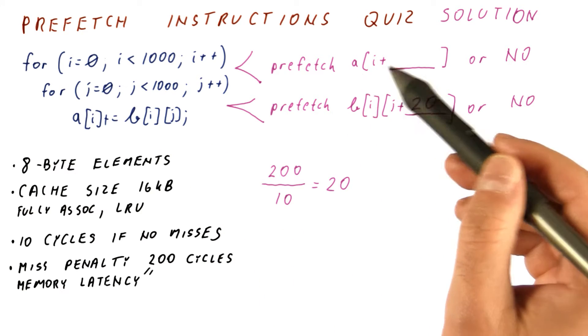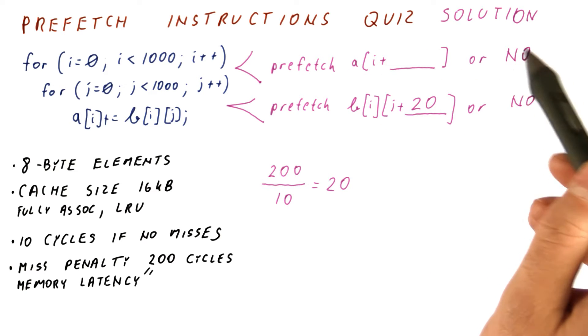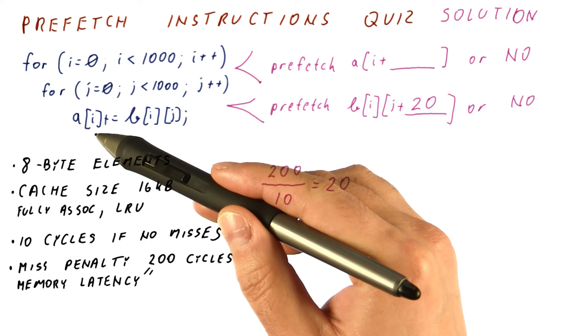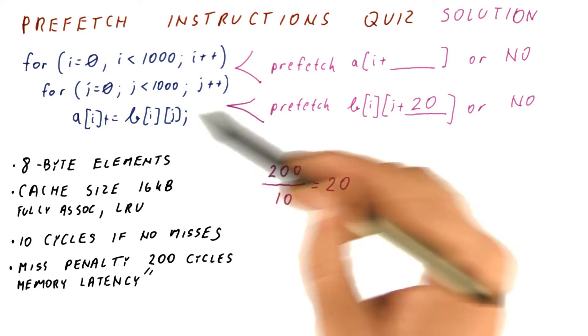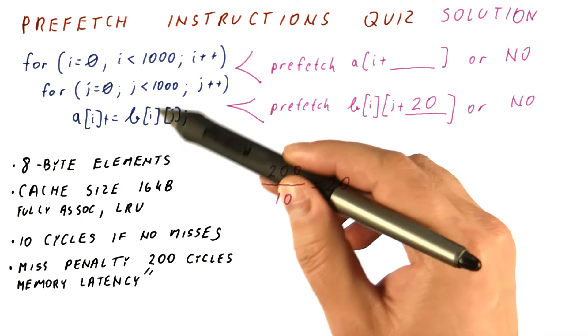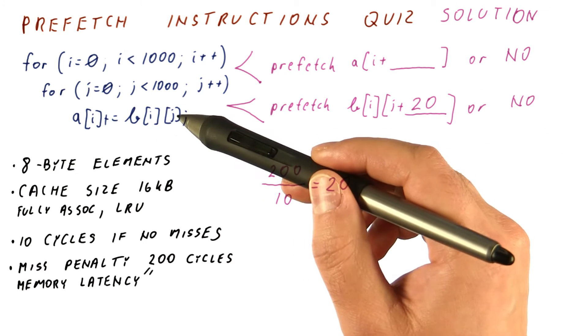Now we need to figure out what to prefetch for A and whether we should be doing the prefetching. We should not prefetch if by the time we reach the access to that element of A—this should be I plus one or something larger—it eliminates that element from the cache.